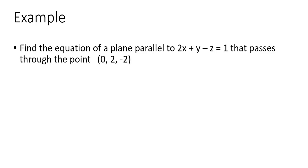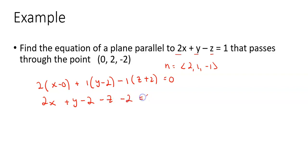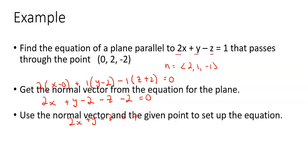For the equation of a plane parallel to 2x plus y minus z equals 1, passing through specific points: a, b, c come from the normal vector given by that equation, which is 2, 1, negative 1. Using the same formula: 2 times (x minus 0) plus 1 times (y minus 2) minus 1 times (z minus negative 2) equals 0. Cleaning up: 2x plus y minus 2 minus z minus 2 equals 0, giving 2x plus y minus z equals 4.